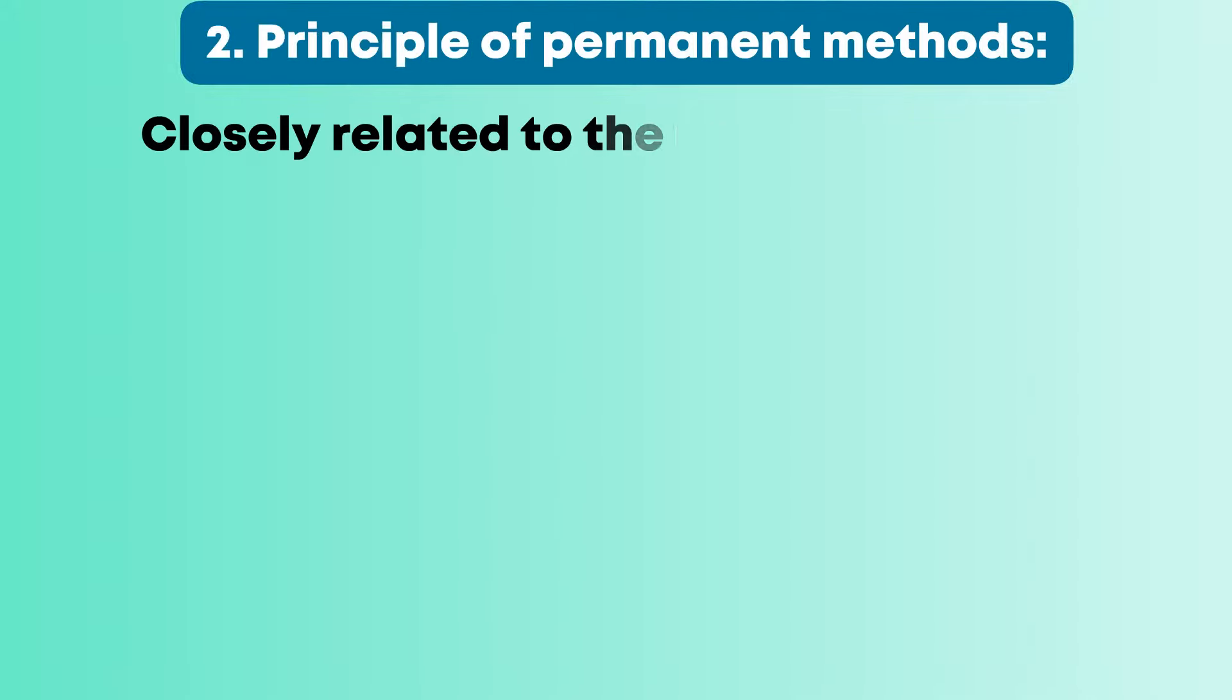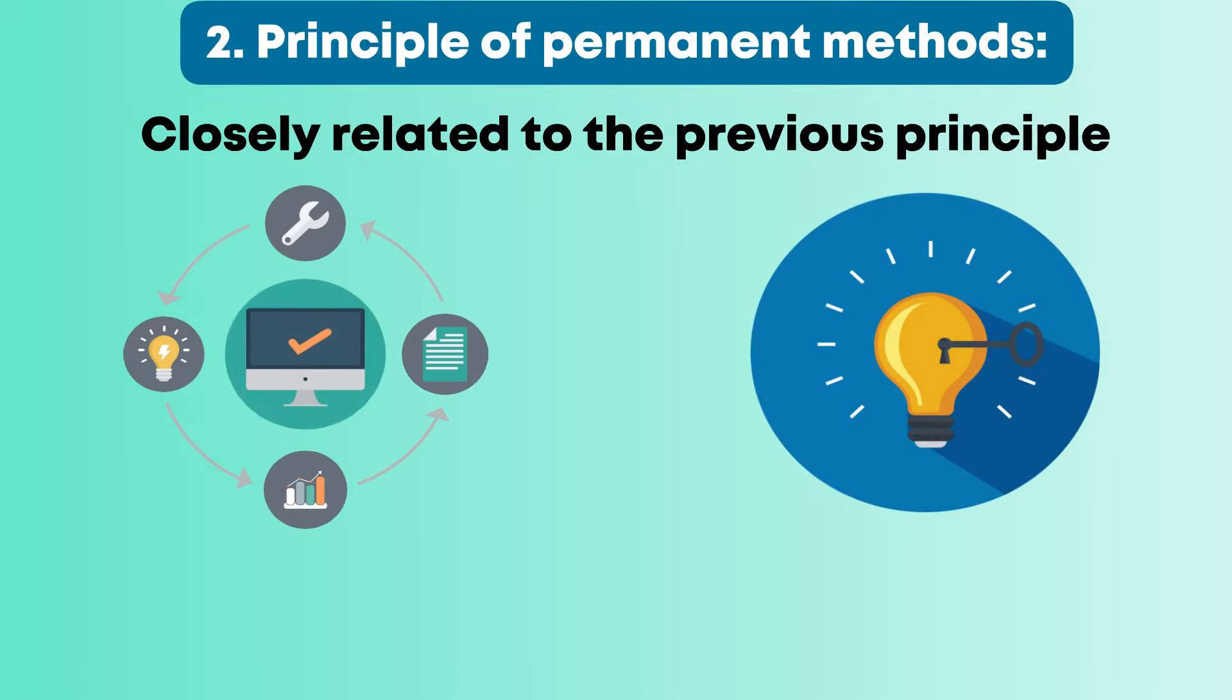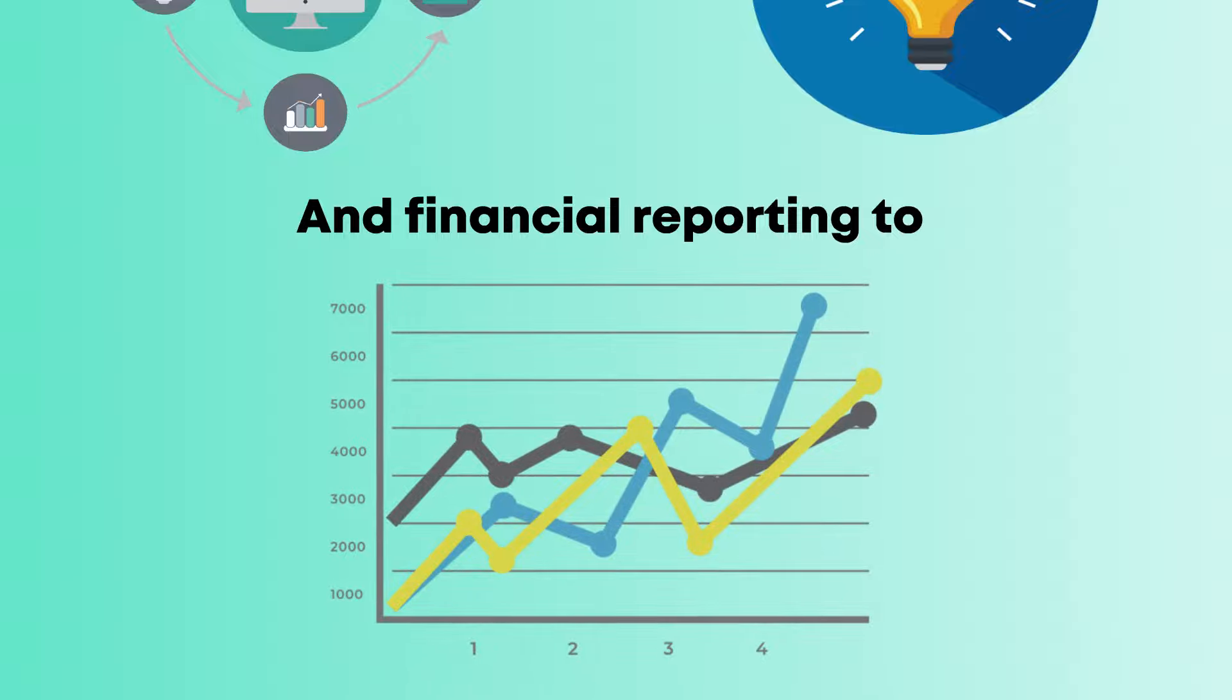Number 2: Principle of Permanent Methods. Closely related to the previous principle is that of consistent procedures and practices being applied in accounting and financial reporting to allow comparison.